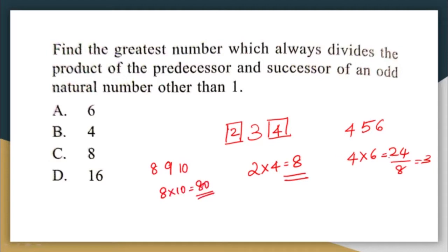You can ask me here: 24 is also divisible by 12, so why can't 12 be the answer? But 12 does not always divide for all cases of odd numbers. If I take 9, the product is 80, and 80 is not correctly divisible by 12.